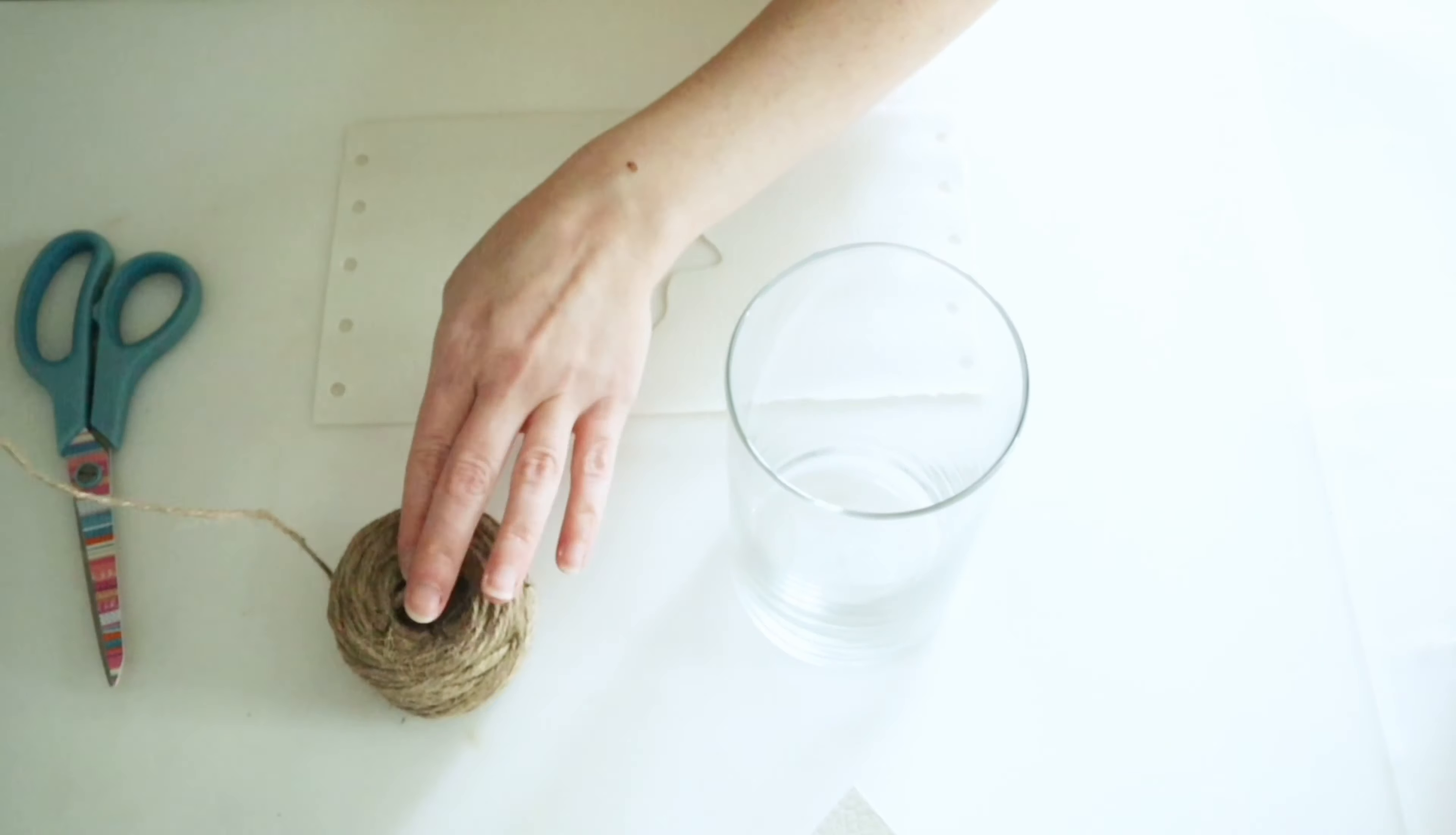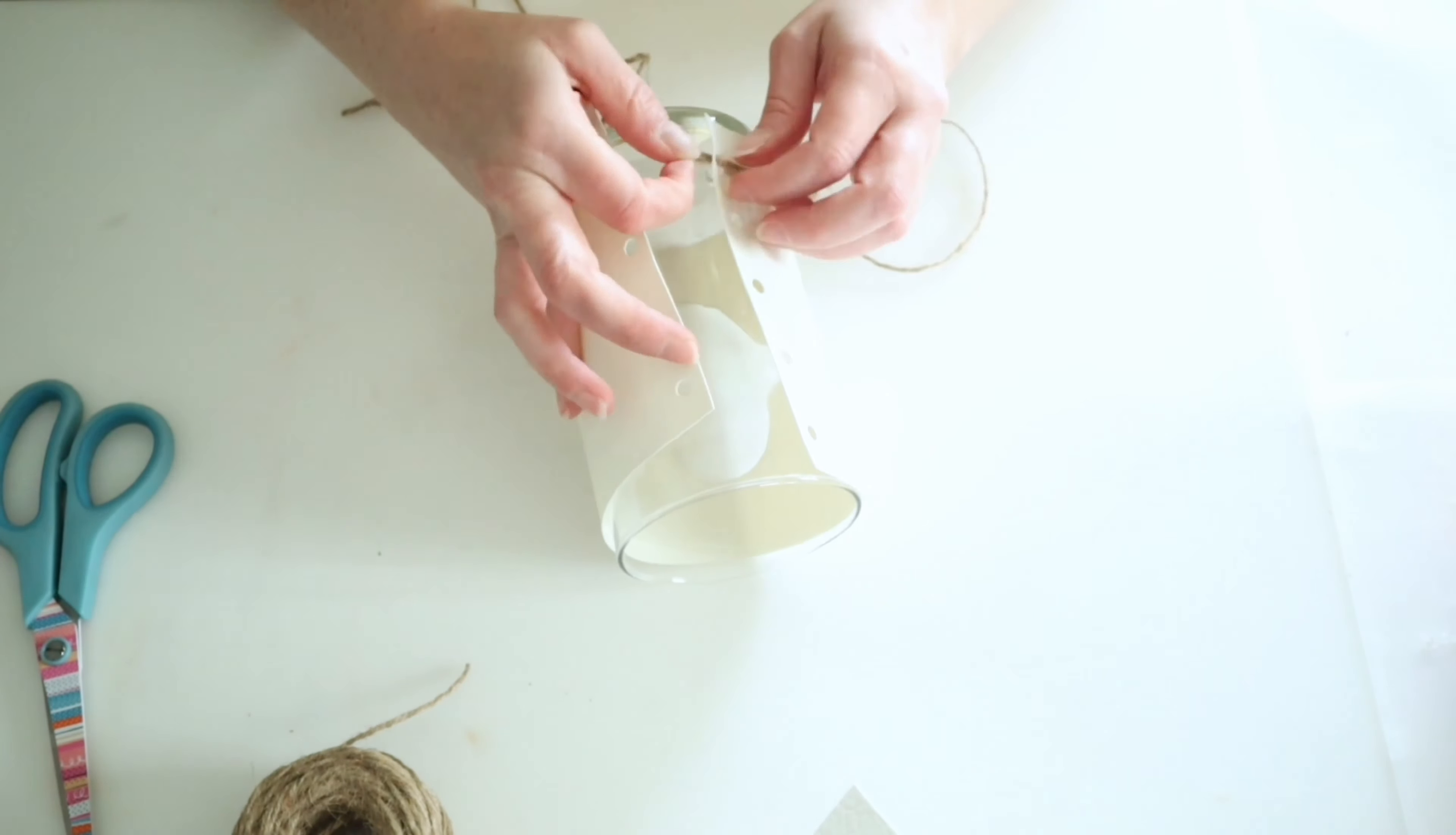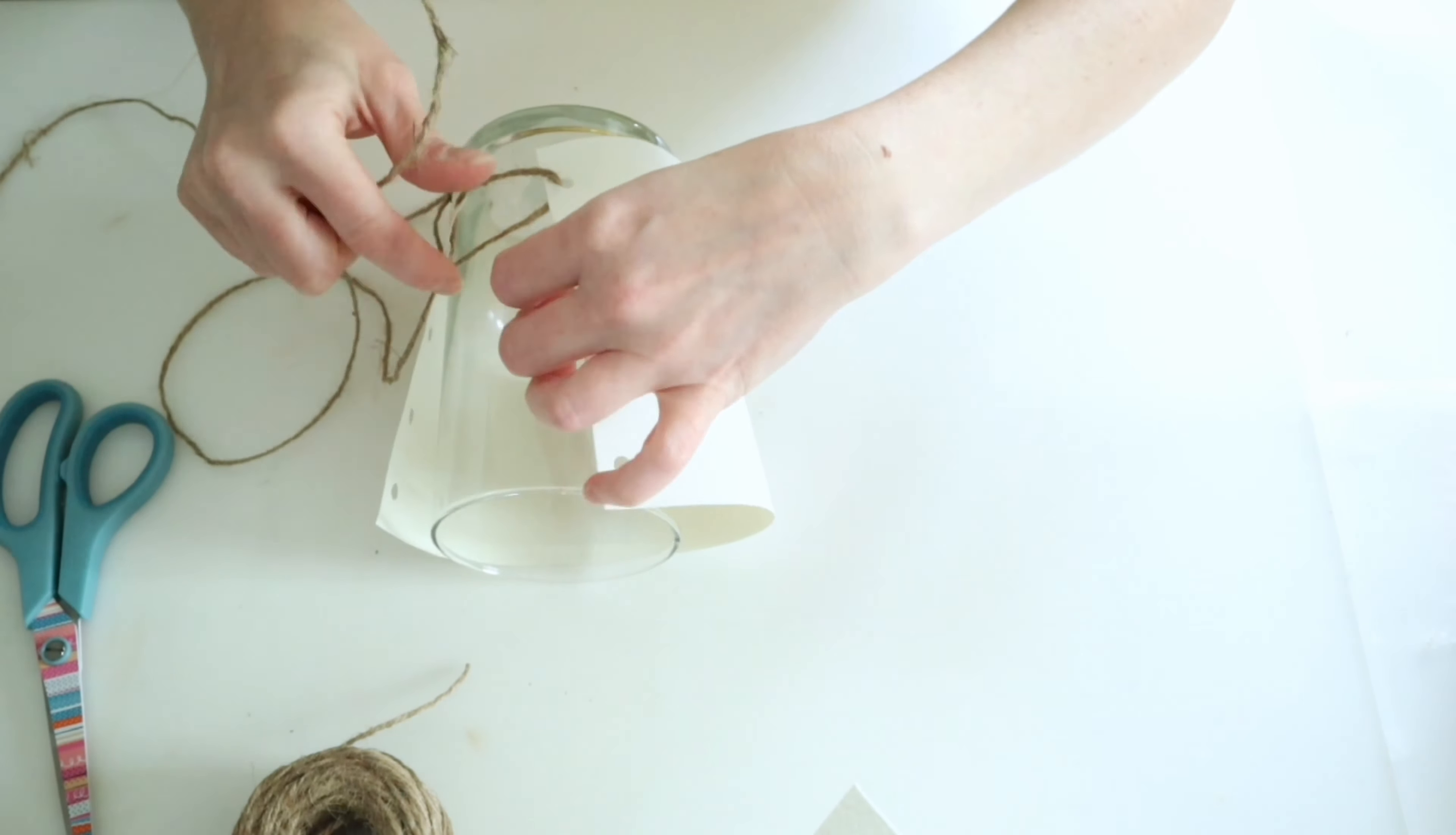Then I'll just use some twine and I will lace this up and I'm just doing a simple lace like you would lace your shoe for this and then I'll tie a bow at the top. You could definitely hot glue this to your vase, but I just want to be able to change this out for different holidays and seasons.